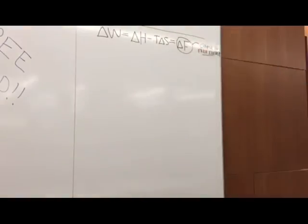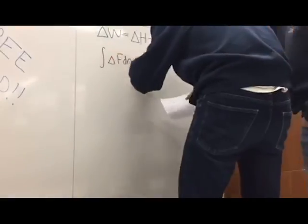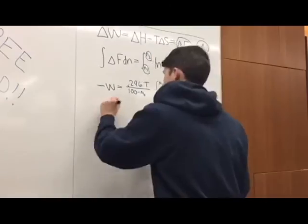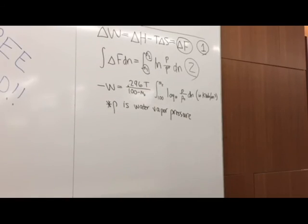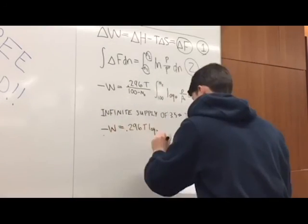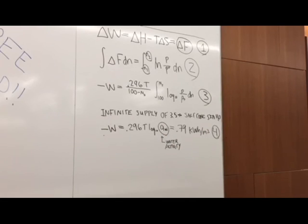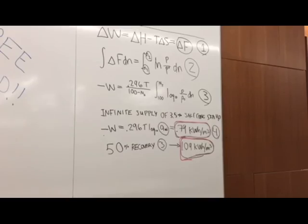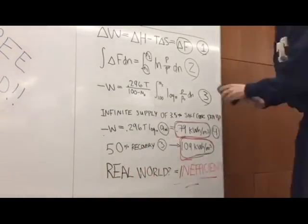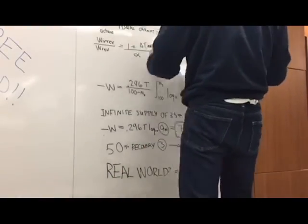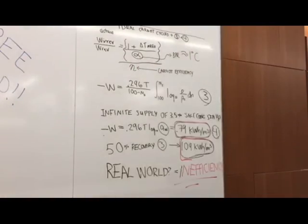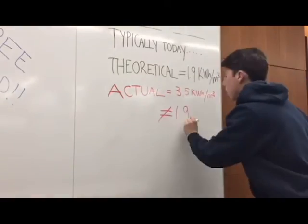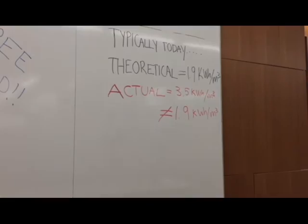With the power of thermodynamics and mathematics, one can calculate the minimum amount of energy required to separate water from its dissolved solids. Calculations reveal that the minimum theoretical amount of energy required, according to pure thermodynamics, is 0.79 kilowatt hours per meter cubed. With a 50% recovery, it becomes 1.09 kilowatt hours per meter cubed. Using Carnot efficiency, this value jumps to 1.9 kilowatt hours per meter cubed. In real life, however, this process actually requires 3.5 kilowatt hours per meter cubed. A main goal of desalination is minimizing the difference between these two values.